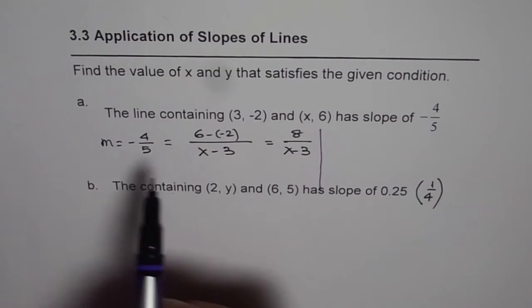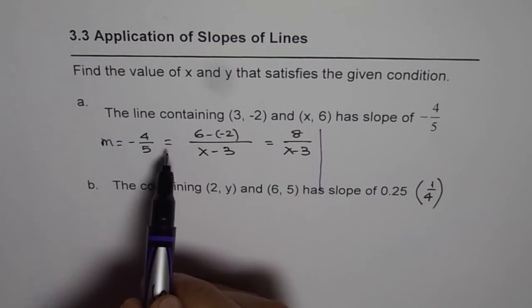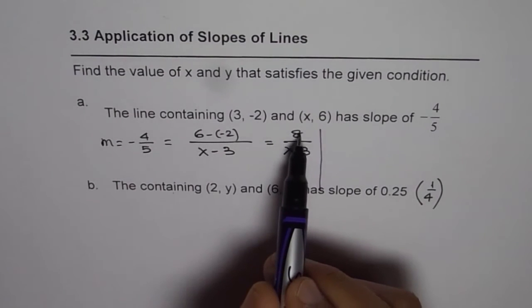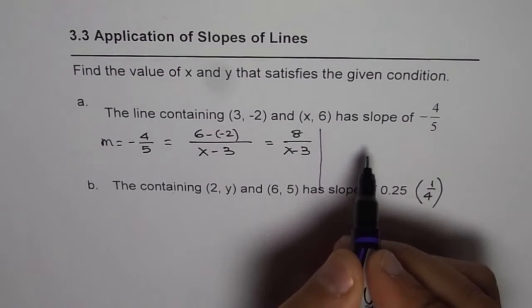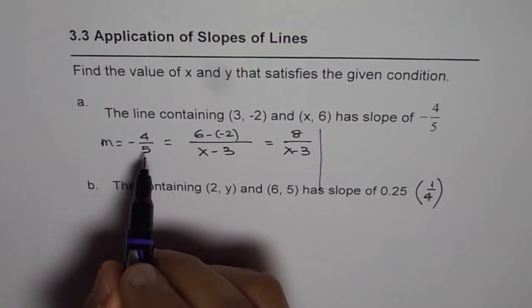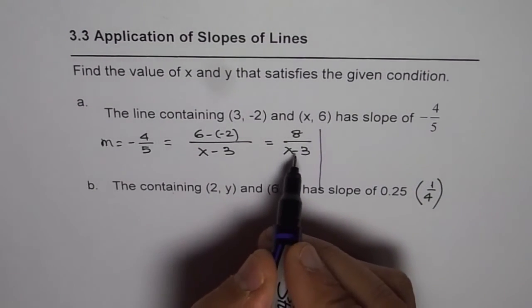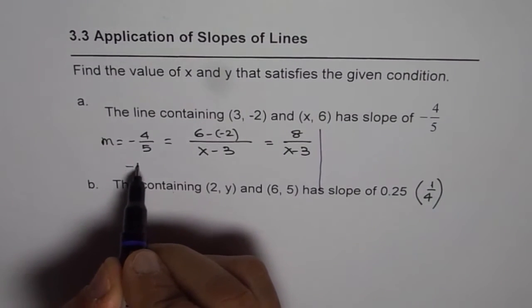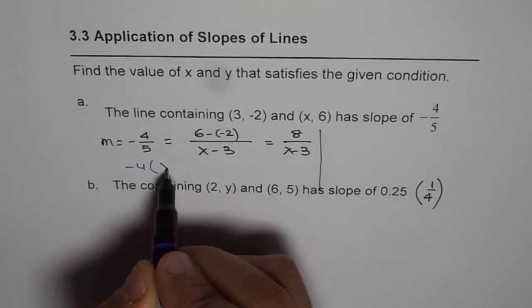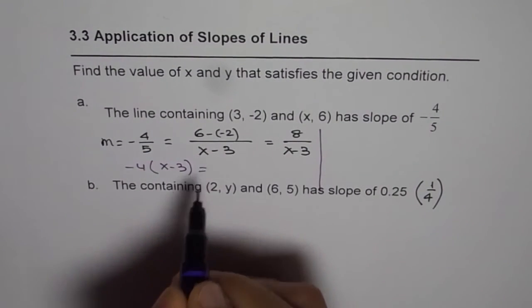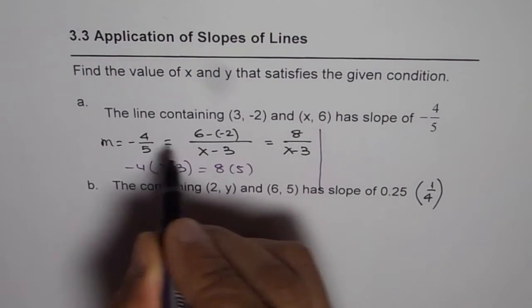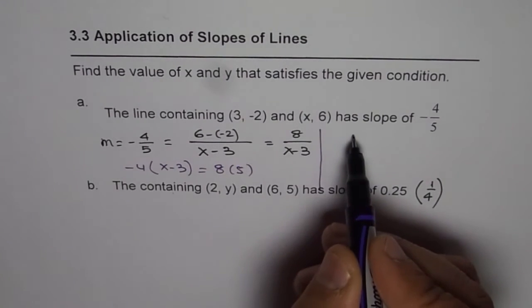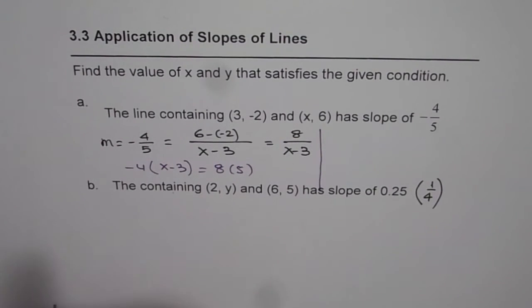So let me squeeze it in here. To solve this equation which is -4/5 = 8/(x-3), let me write it separately and then we will solve it here. So what we will do is we will cross multiply. We will multiply -4 with (x-3) and 8 with 5. So we cross multiply to solve the equation.